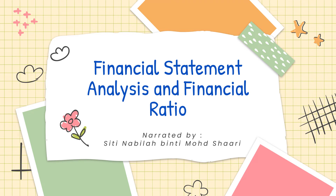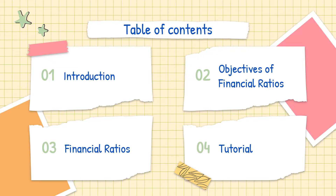Assalamualaikum. This is the last topic for the semester under course code ACC117 or ACC106. The last topic we're going to cover is financial statement analysis and financial ratios. Please have your textbooks and past year papers before you so that we can go through the tutorial as we go along with the slides. We'll start with the introduction, followed by the objectives of financial ratios, then the financial ratios themselves, and lastly some tutorial exercises.